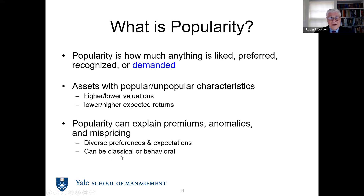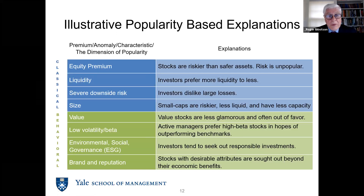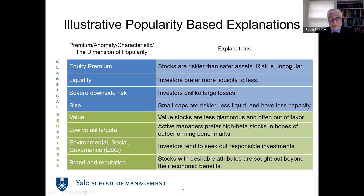We don't have to confine ourselves to the classical world — we can also move to the behavioral world. I mentioned the equity risk premium. In the capital asset pricing model, basically stocks are riskier than safe assets. Risk is unpopular. The CAPM is all about popularity, but it only talks about one thing that's popular — that is risk. Risk is unpopular, and if risk is unpopular, it's going to be priced. But of course even in classical finance, you're going to have something like liquidity, which is very popular, meaning it's going to have a higher price but a lower expected return for a given set of cash flows.